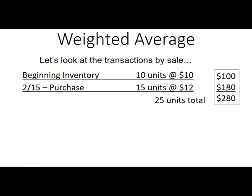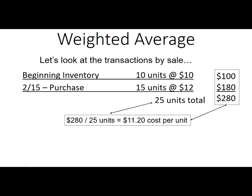10 units at $10 is $100, 15 units at $12 is $180 — that's 25 total units and $280 in total cost, which gives us an average cost of $280 divided by 25 units, or $11.20 per unit. This makes intuitive sense: the average of $10 and $12 is $11. The weighted average is pulled slightly above $11 because we have more units in the more expensive category — 15 units versus 10.